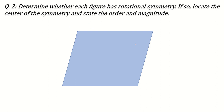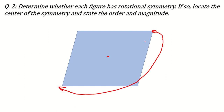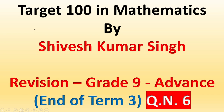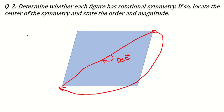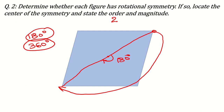Now let's determine whether the parallelogram has rotational symmetry. Fixing the center point and rotating, at 180° the parallelogram overlaps with itself. It then overlaps again at 360°, mapping onto itself 2 times. So the order of the parallelogram is 2 and its magnitude is 180°.